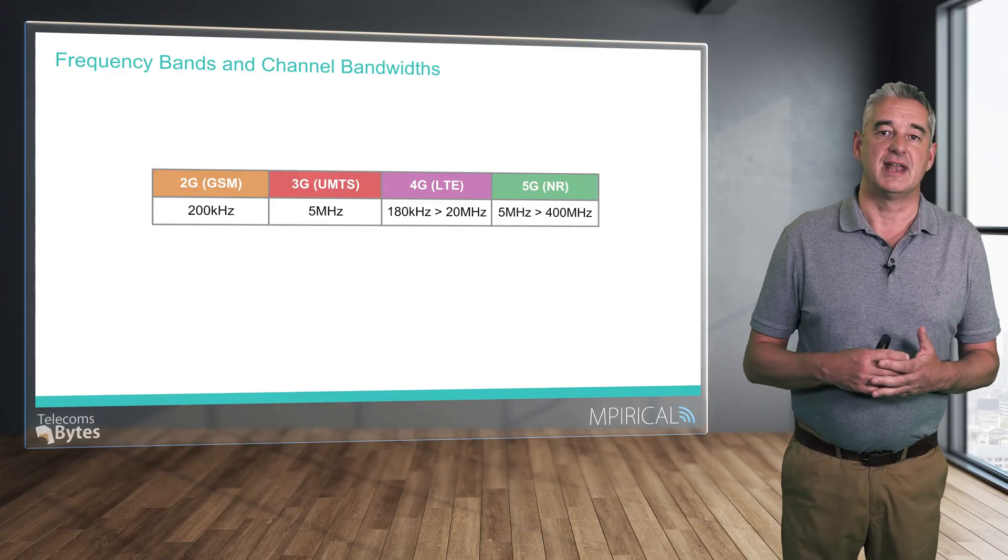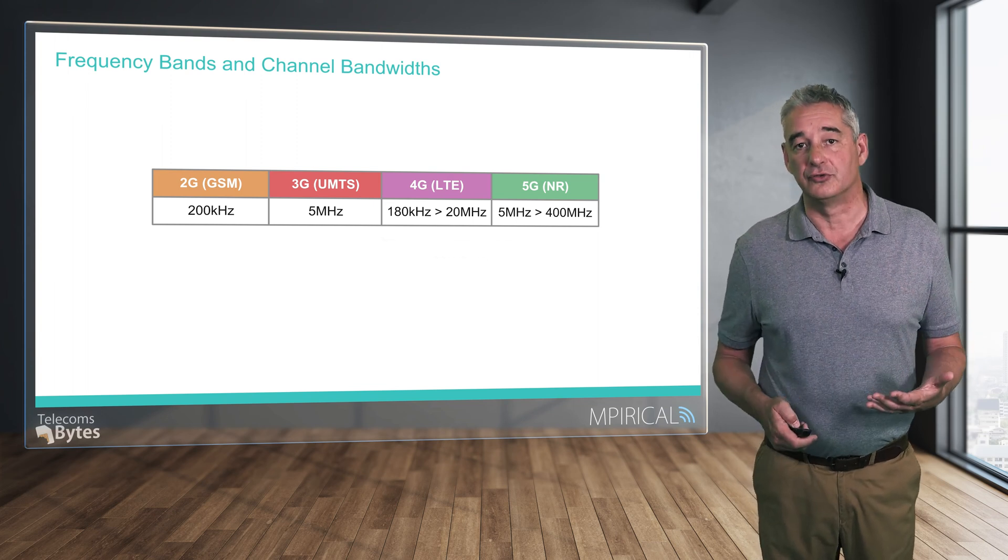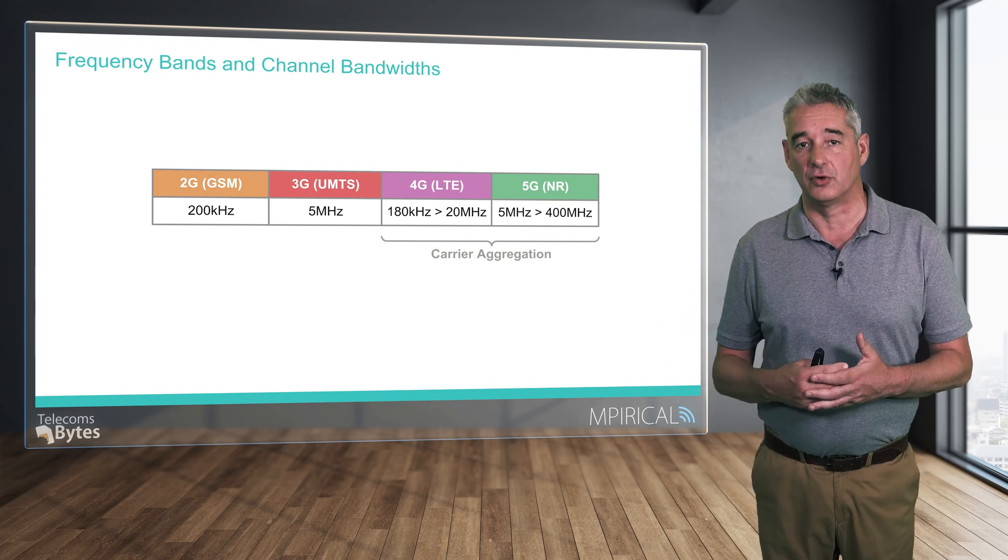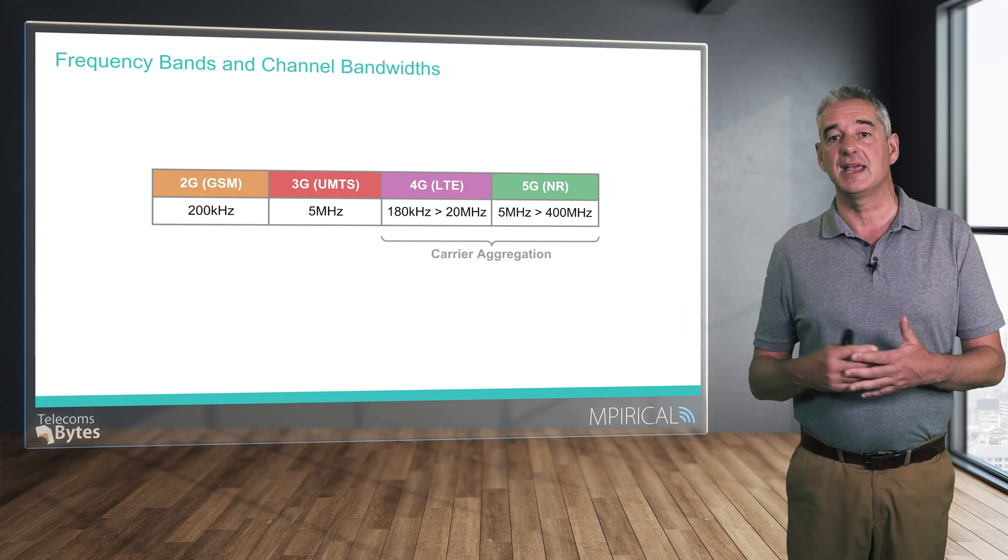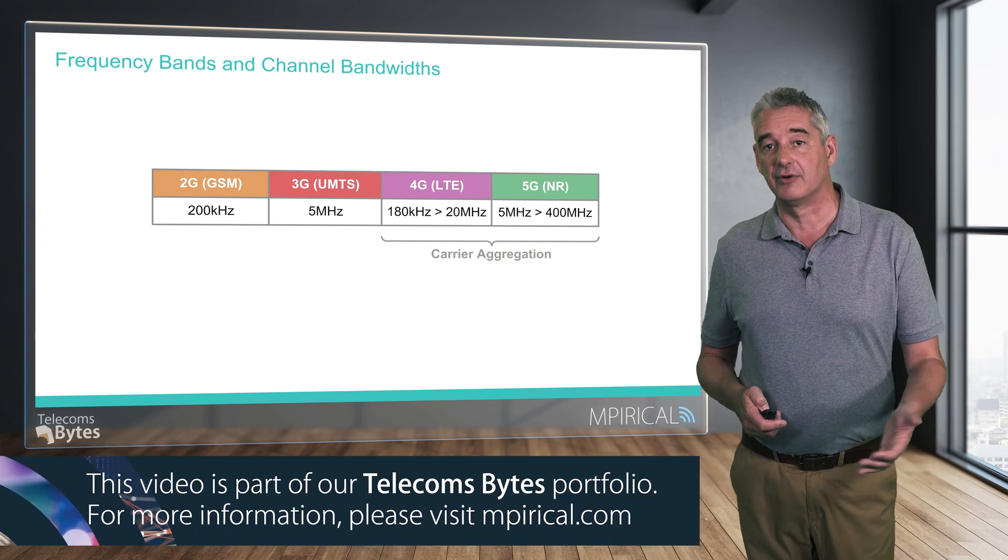In 4G and 5G networks, it is also possible to allocate multiple channels to a device at the same time to increase still further the available resource and thus drive up data rates. This is referred to as carrier aggregation.